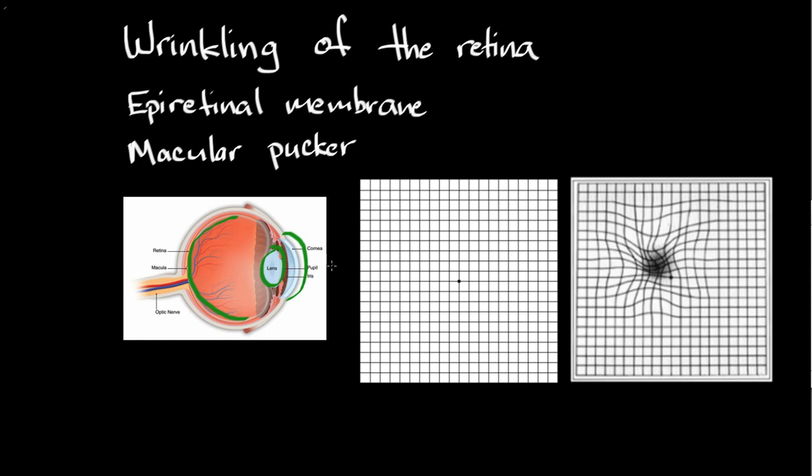So light is going to be passing from the outside world to the cornea, through the lens, and it's going to land on the retina. The retina is going to process that image, send it down the optic nerve towards the brain.